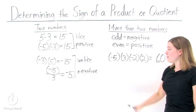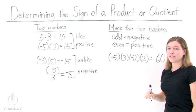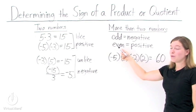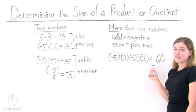Now, go back and count the signs. One, two negatives. Two. That's an even number. So, our answer is going to be positive. Positive 60.